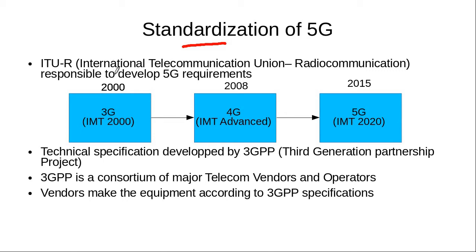The first organization is the International Telecommunication Union, abbreviated as ITU. ITU is an organization of the United Nations, and more importantly, the Radio Communication Sector of the ITU, known as ITU-R, is responsible for the development of the requirements for the 5G system.